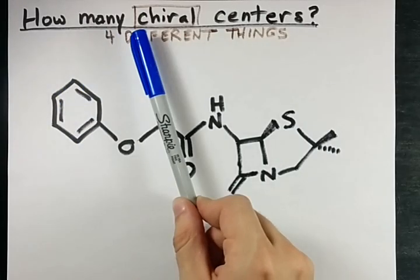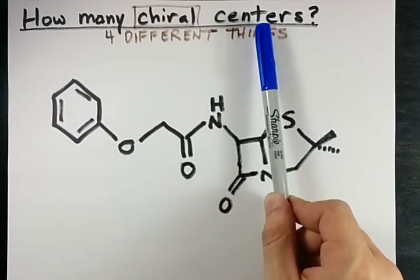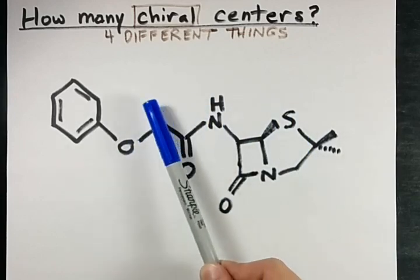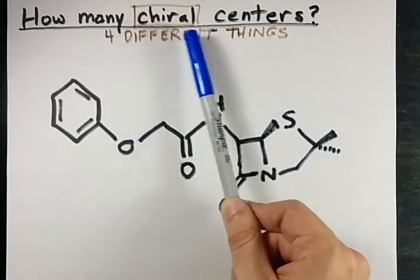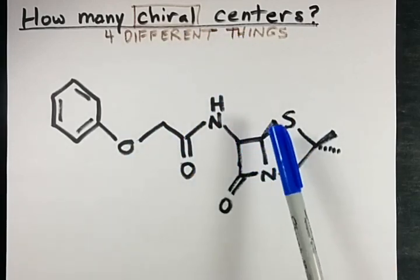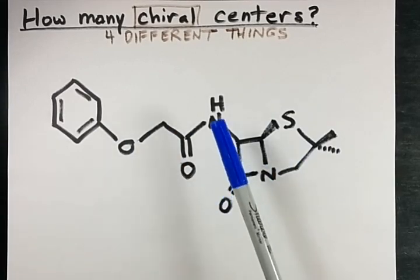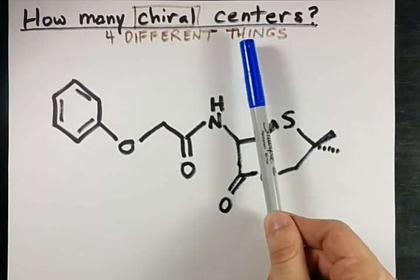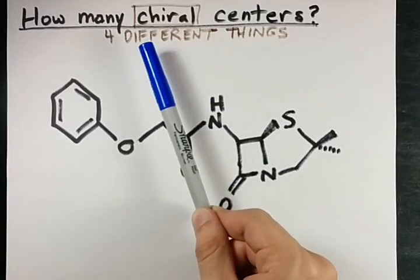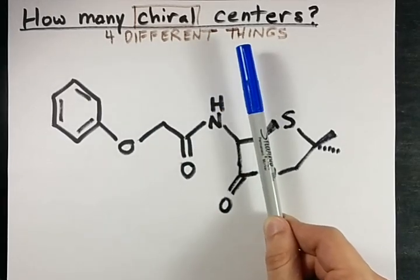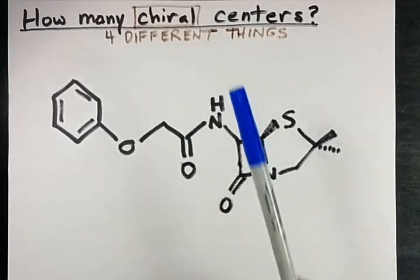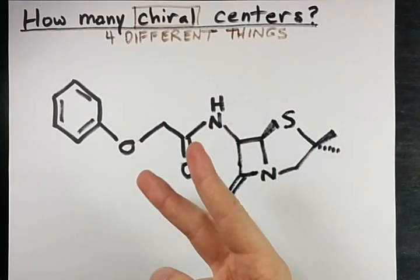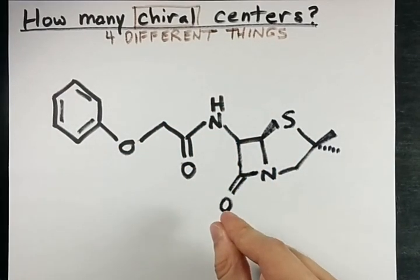How do you figure out how many chiral centers there are in a molecule? This really just comes down to being able to find chiral centers and then counting them for the entire molecule. How do you identify a chiral center? You need to find atoms that have four different things attached to it — four things, and they all have to be different. Lone pairs count as a thing here.